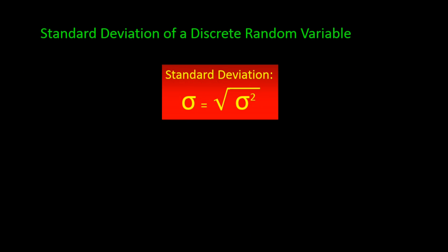The standard deviation for a discrete random variable is calculated the same way as we learned earlier — we simply take the positive square root of the variance. So the square root of 1.6475 is 1.2835. The standard deviation is measured in the same units as the original discrete variable, so it can be used better to compare and analyze measurements than the variance, which is measured in squared units and therefore more difficult to interpret. This concludes the tutorial on discrete probability distributions and discrete random variables. Please make sure to watch the next tutorial on the binomial distribution.